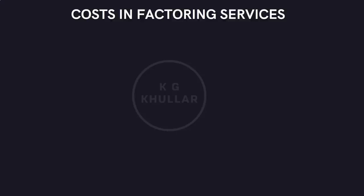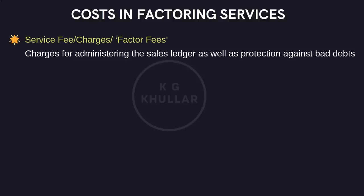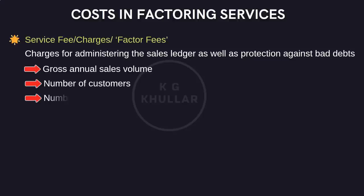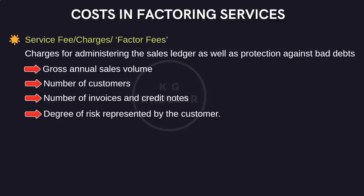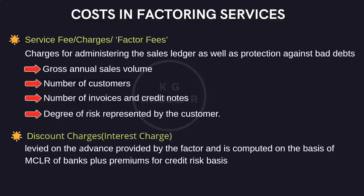Let's see the cost of factoring, which is basically the cost incurred to the client for getting the services of a factor. There are two types of cost. First is the service fee or factor fee, levied for the work involved in administering the sales ledger as well as protection against bad debts. This factor fee is calculated as a percentage of the gross value of invoices factored and is assessed on the basis of: gross annual sales volume, number of customers, number of invoices and credit notes, and finally the degree of risk represented by the customer. The next cost is the discount charge, i.e. interest charge, levied on the advance provided by the factor and computed on the basis of MCLR of banks plus a premium for credit risk. It is calculated on a day-to-day basis on advances outstanding and ranges from 1 to 3% above the MCLR rate.